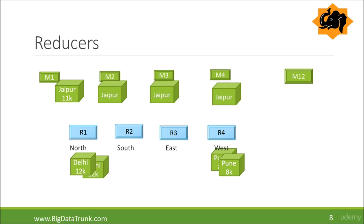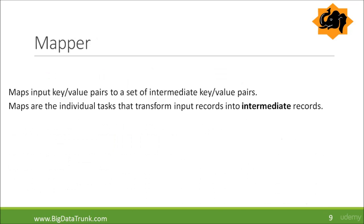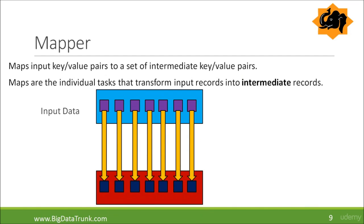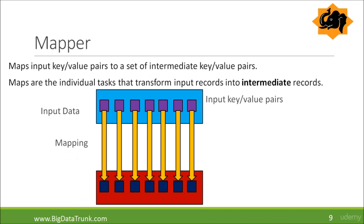Now let us see what mappers and reducers are in detail. A mapper maps input key-value pairs to a set of intermediate key-value pairs. Maps are individual tasks that transform input records into intermediate records, and mappers work in parallel. We call that output intermediate records — in our case, the index cards. Hadoop deals with data in the form of key-value pairs, where the key is the city name and the value is the sales total for each particular piece of input.